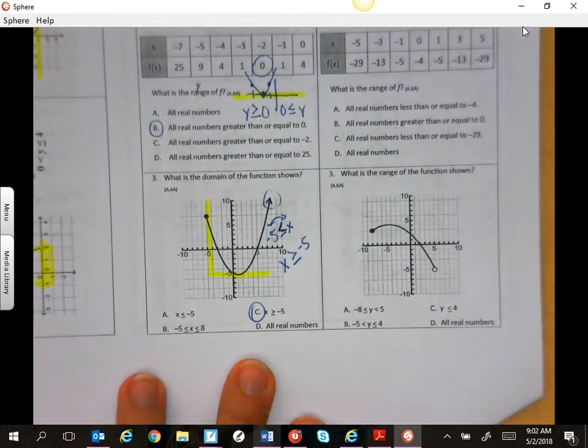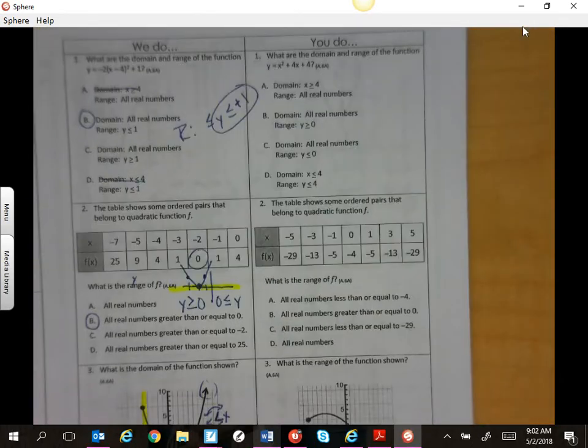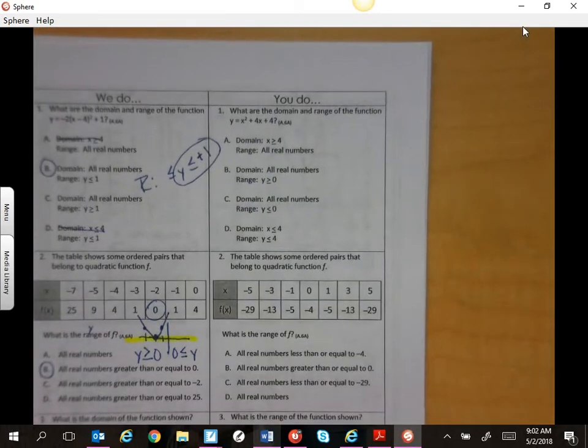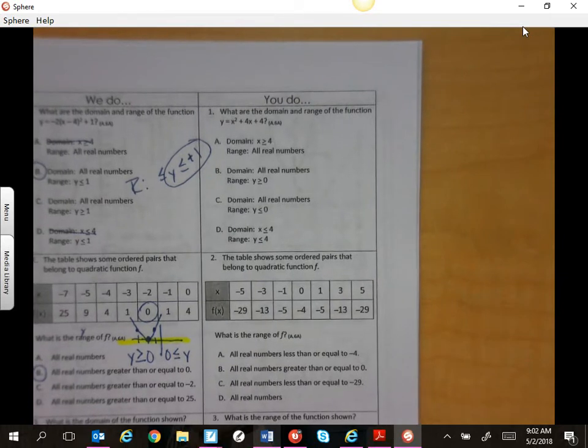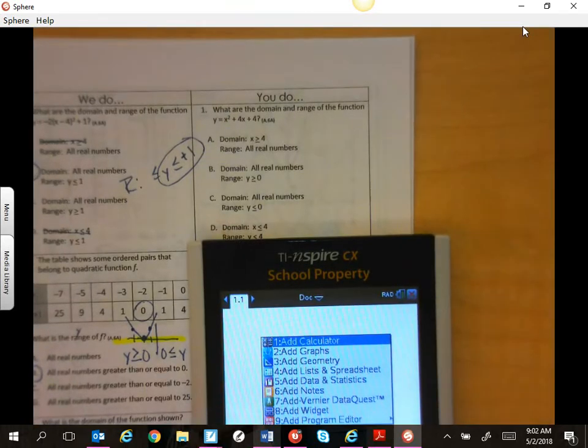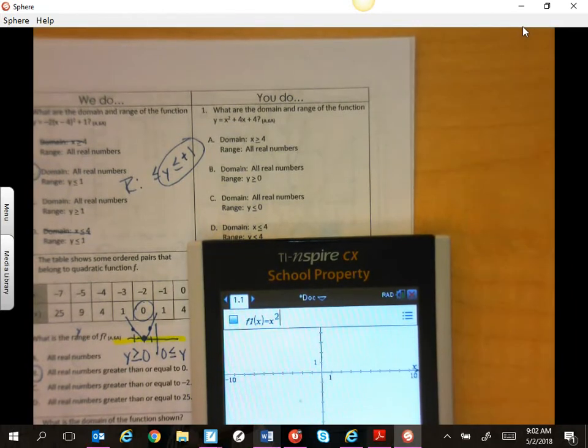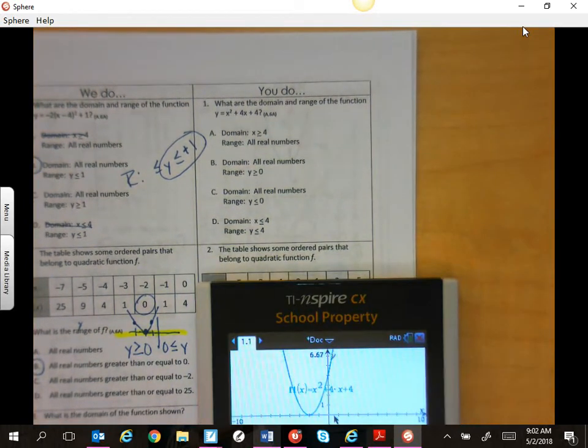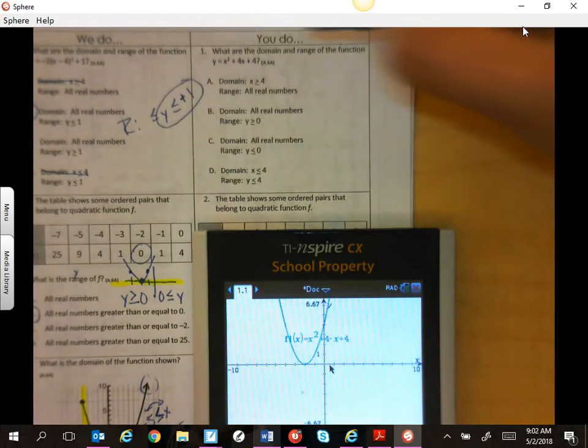So try the you-do. And then I'll go over that with you. So welcome back. We're going to graph this to find our domain and our range. x squared plus 4x plus 4. The domain is going to keep going, right? It doesn't stop. So it's going to be all real numbers.